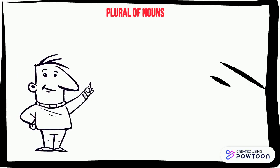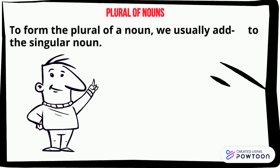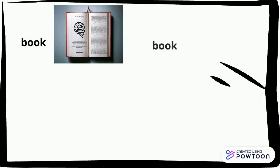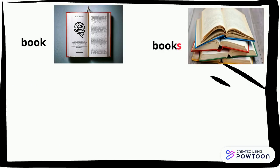To form the plural of nouns, we usually add s to the singular noun. For example, book becomes books, pencil becomes pencils.